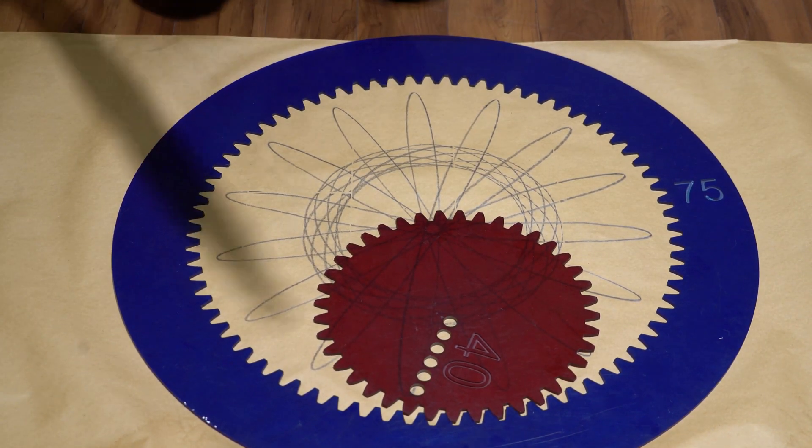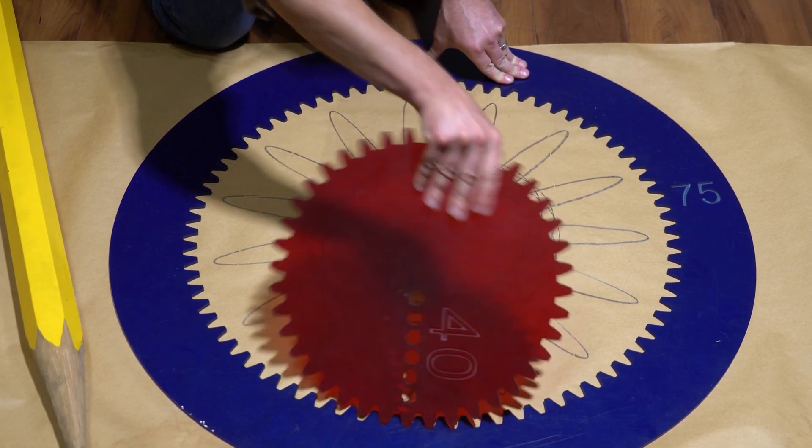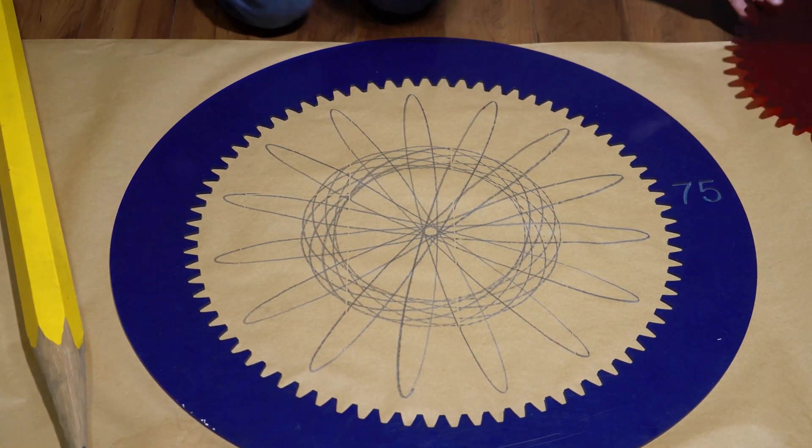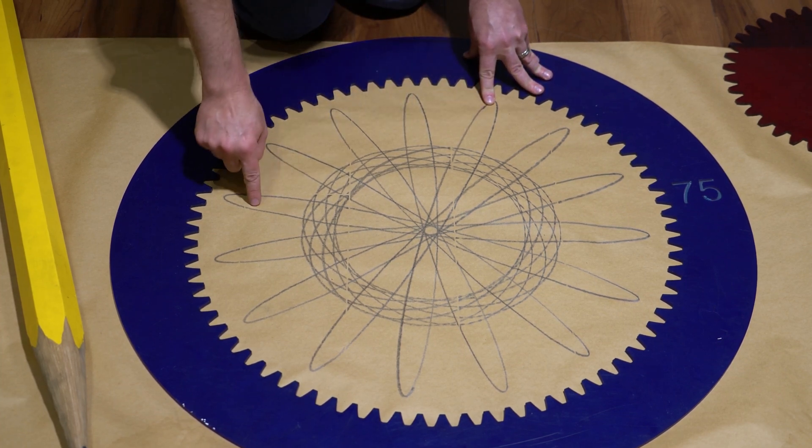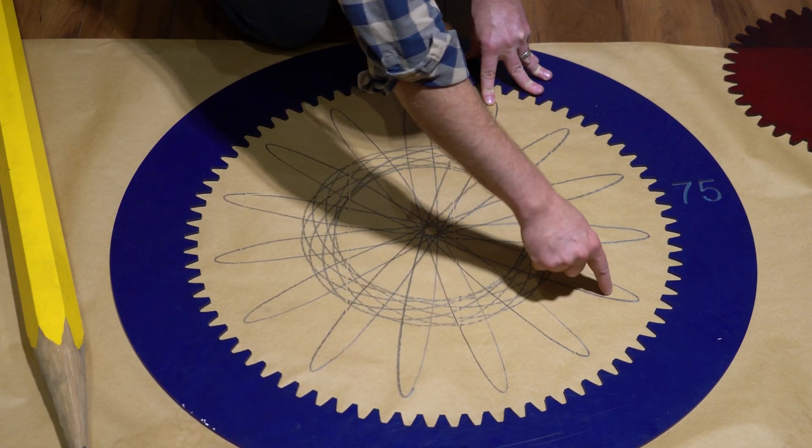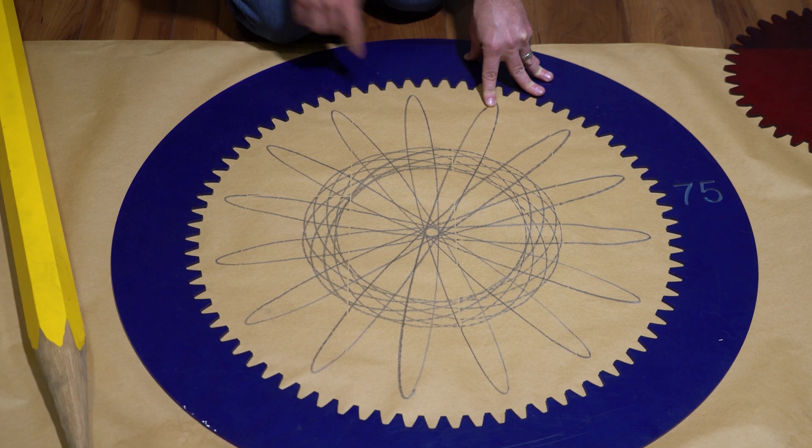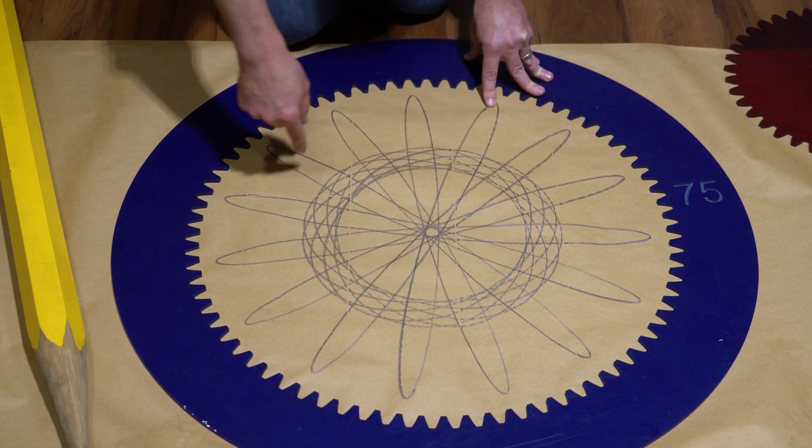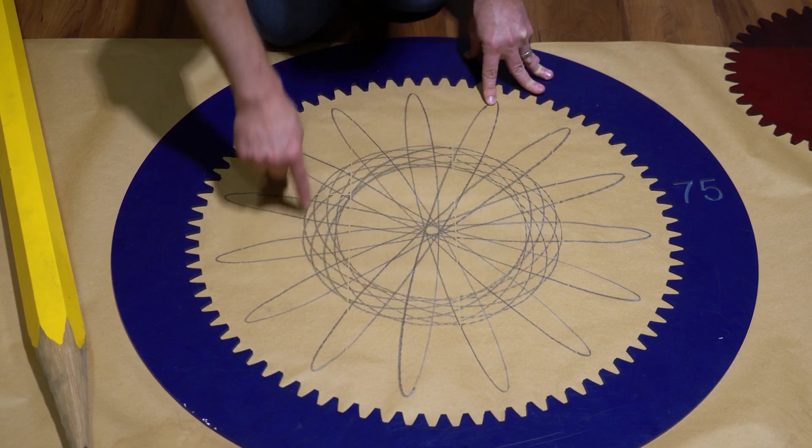Okay, let's take a look at what that looks like and count how many points are on our hypotrochoid. 1, 2, 3, 4, 5, 6, 7, 8, 9, 10, 11, 12, 13, 14, 15. Just like the math predicted, and this inner circle actually has 15 points as well. They're just so close together that they almost make a circle.